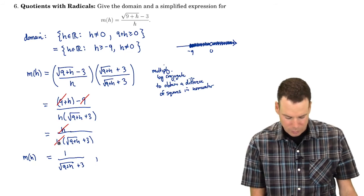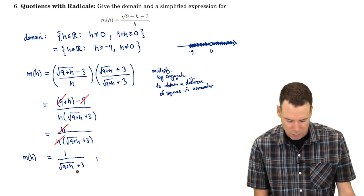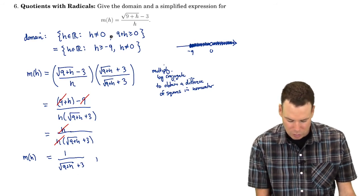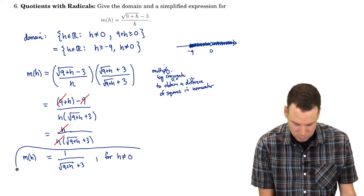Again remember though that if I cancel something off it now looks like this new expression we're allowed to plug h into but we're not because h still isn't in the domain so I still need to indicate that here for h not equal to zero. So there's our simplified expression.